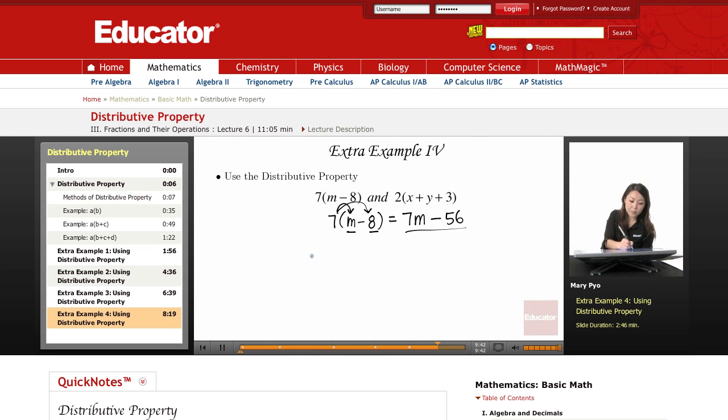My next example: 2 times the quantity x plus y plus 3. So for this one, I have three different things I have to distribute to. I have to distribute the outside number to. So I'm going to take the 2, multiply it to the x first. 2 times x is 2x.